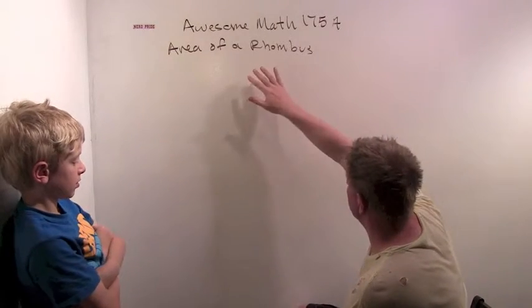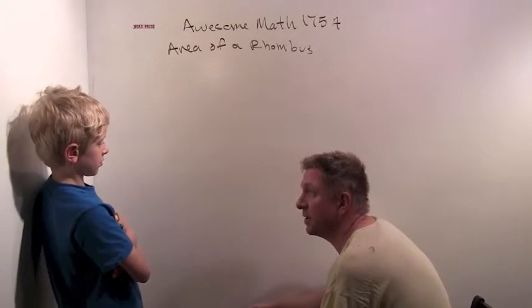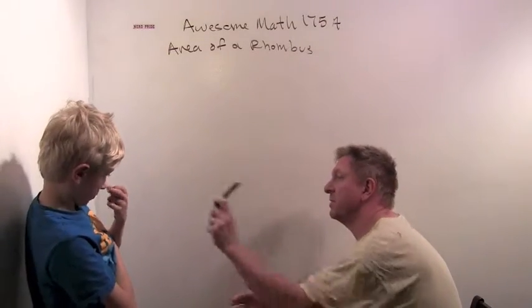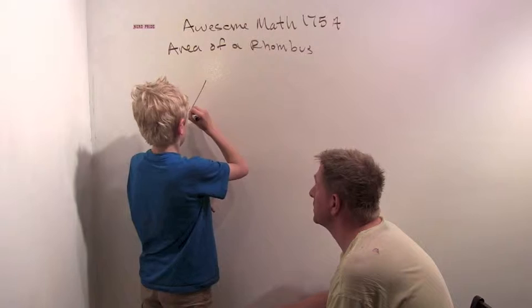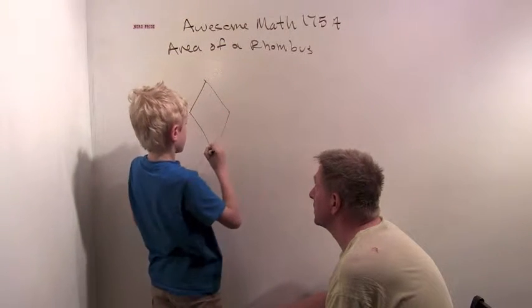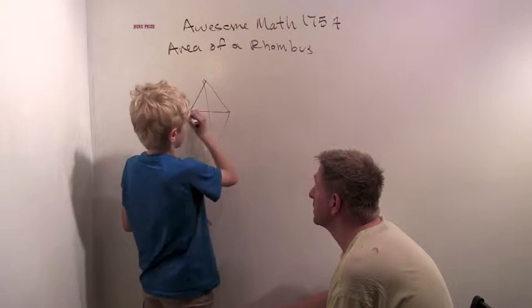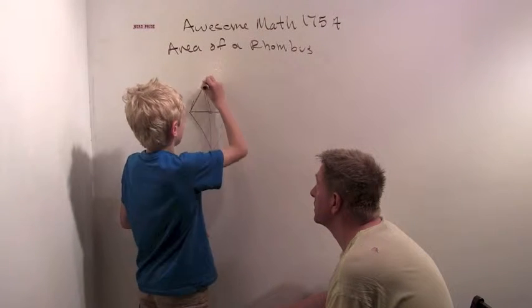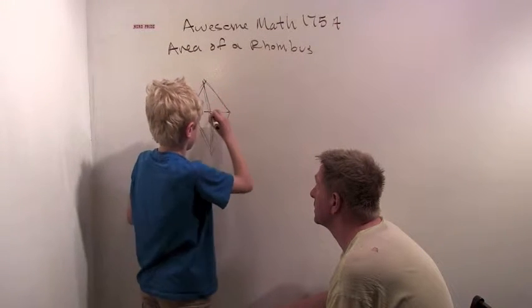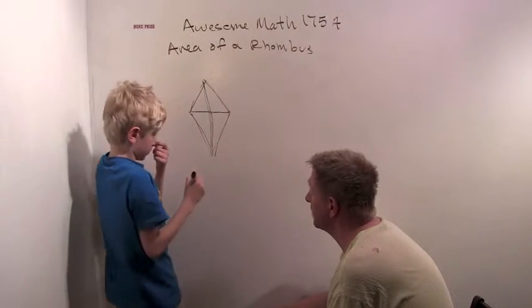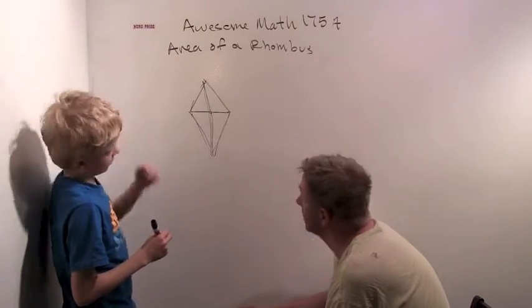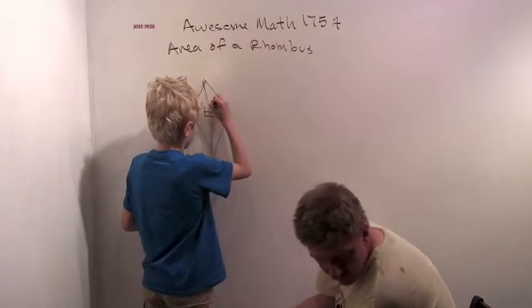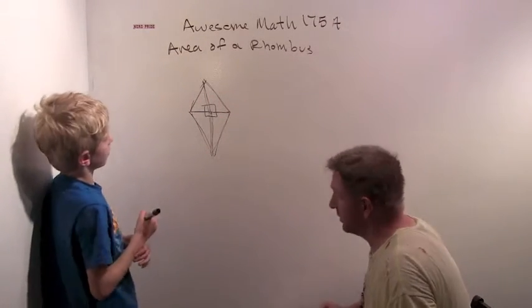But one of the things we talked about this morning was the area of a rhombus. And do you remember how we figured out the area of a rhombus? Well, I think we chopped it up into four congruent equilateral triangles. Why are those triangles equilateral? Four congruent right triangles. Oh, right triangles. Okay. So those are all right triangles.